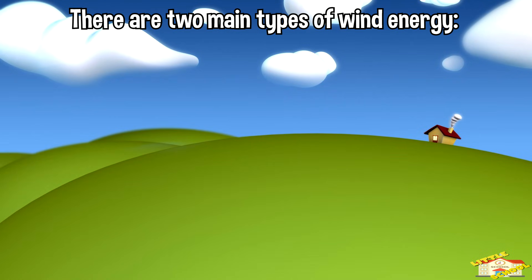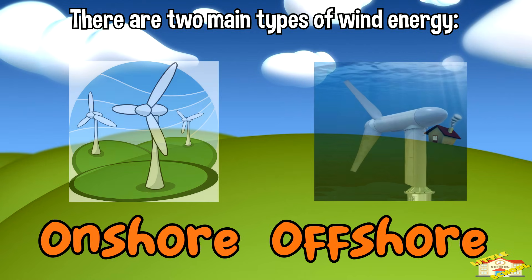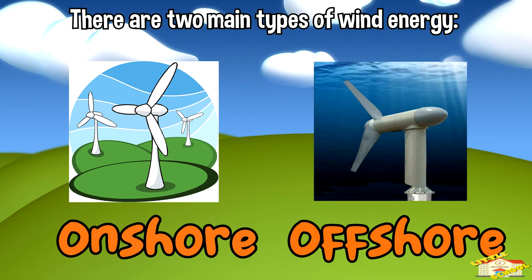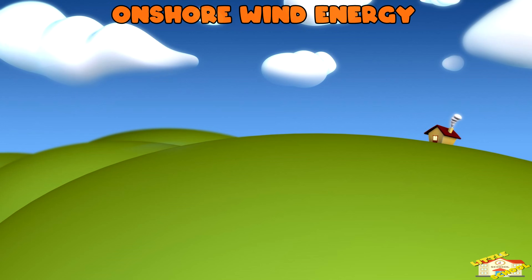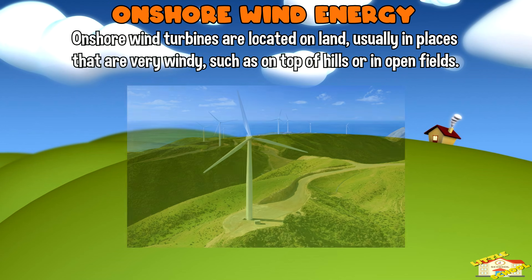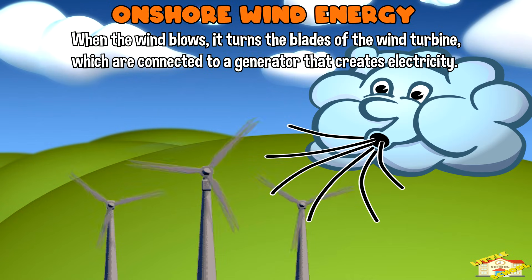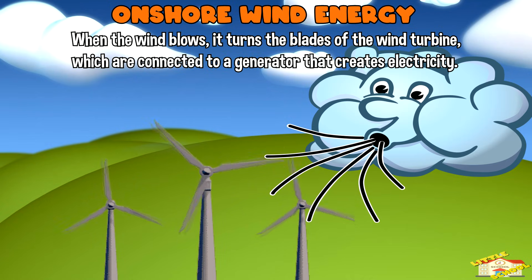There are two main types of wind energy: onshore and offshore. Onshore wind turbines are located on land, usually in places that are very windy, such as on top of hills or in open fields. When the wind blows, it turns the blades of the wind turbine, which are connected to a generator that creates electricity.